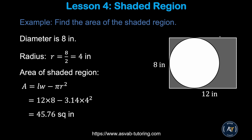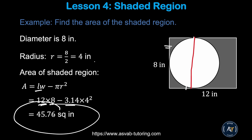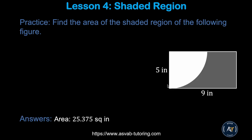Next we'll learn how to find shaded area. You find the area of the rectangle and subtract the area of the circle. The width of the rectangle equals the diameter of the circle, which is 8, so the radius is 4. Shaded area = length × width − πr² = 12 × 8 − 3.14 × 16 = 96 − 50.24 = 45.76 square units.